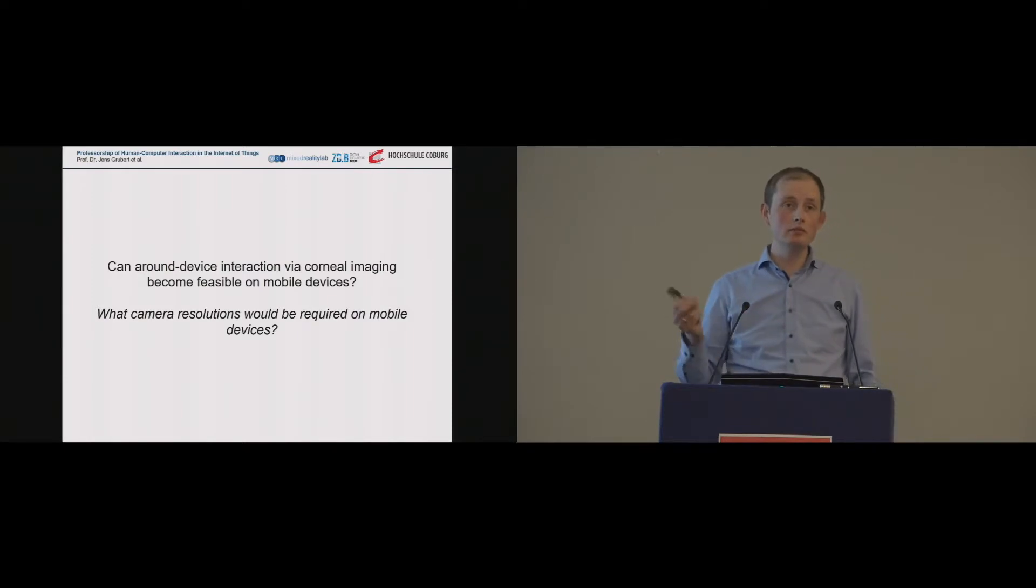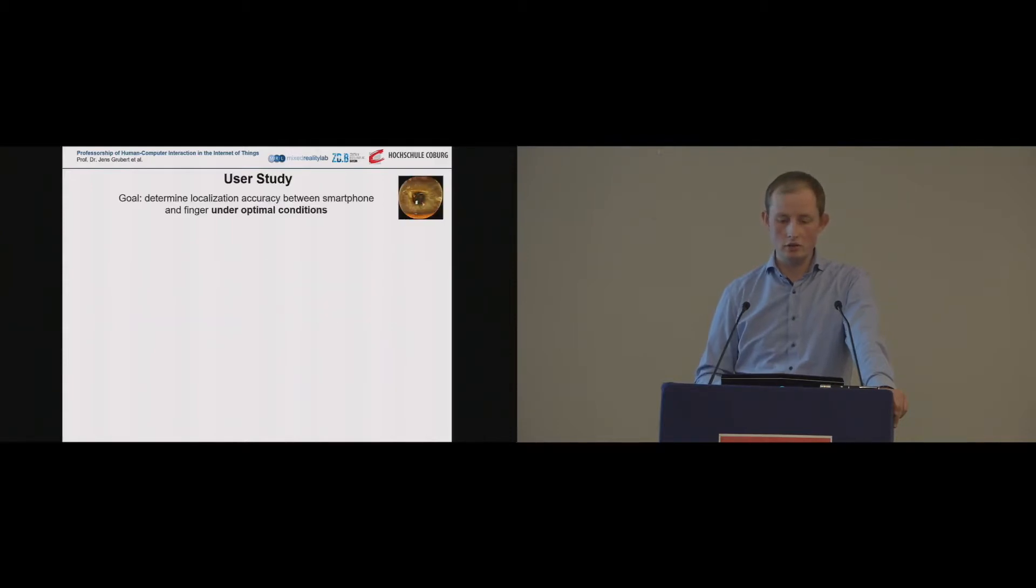So with this pipeline, at least in principle, you can detect and enable this around device interaction. But the next question that really was very important to us to answer is what camera resolutions would we actually need to make this happen. We weren't so much concerned yet with robustness or real-world performance, but actually to see how long do we have to wait until we can use mobile devices to actually do these techniques. And towards this end, we conducted a user study where we wanted to know the localization accuracy between the smartphone and the finger under optimal conditions. We actually had two tasks, two conditions. I'm mainly concentrating on the more realistic one where we have a smartphone and a finger. But we have very optimized laboratory conditions, plain background, optimal lighting, and so on and so forth.